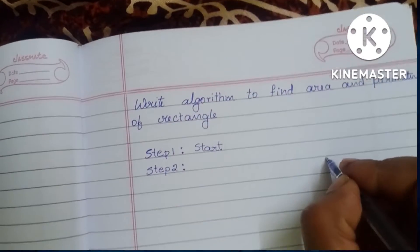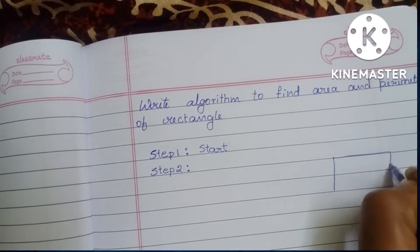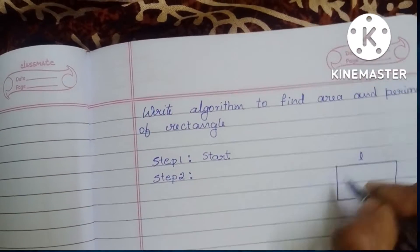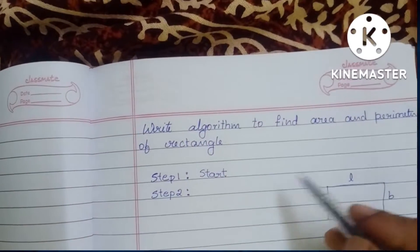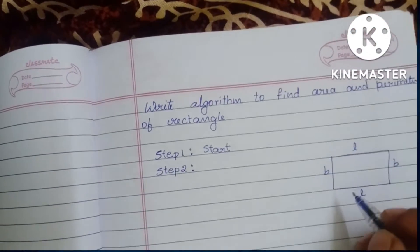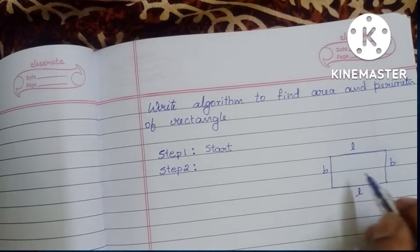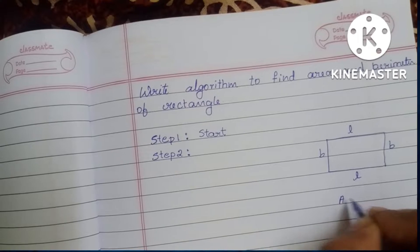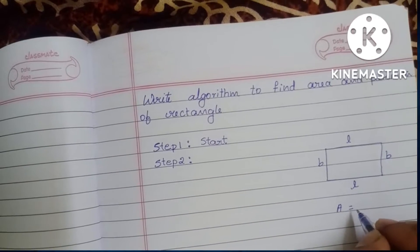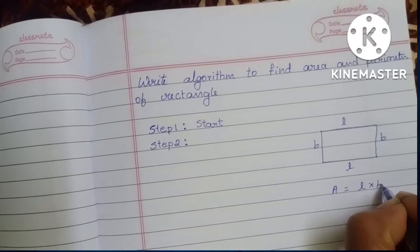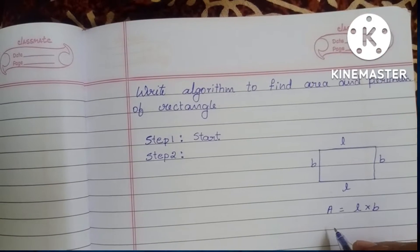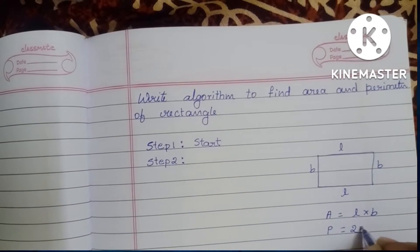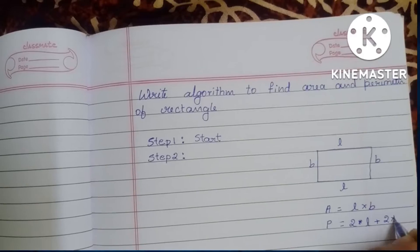To find the area and perimeter of a rectangle, the formulas are: Area (A) is equal to length times breadth. To find the perimeter of a rectangle, the formula is P is equal to two times length plus two times breadth.